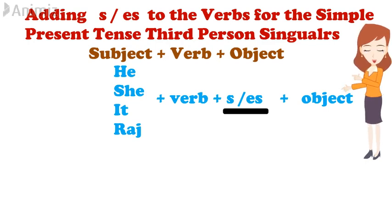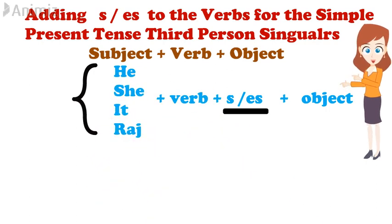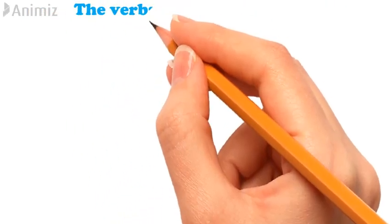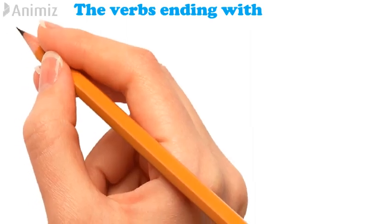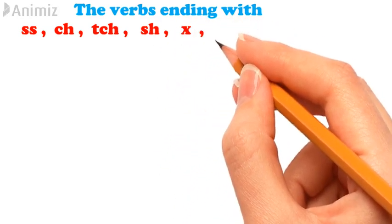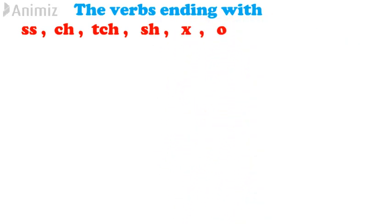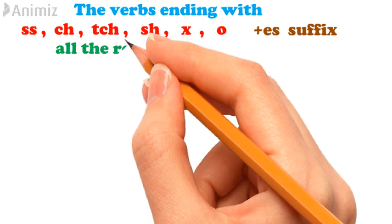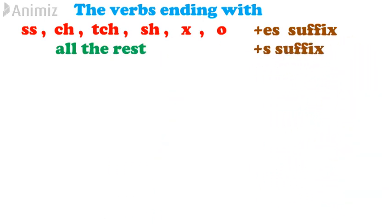Simple present tense madhe vaakye banvatas thana third person singular subject asel, thar tya cha kriya padala S kima ES prathay zhoda ba lagtu. Kriya padala S prathay zhoda cha ki ES prathay zhoda cha hye pudil niya mancha adharay tharotat. The verbs ending with the letters SS, CH, TCH, SH, X, or O need to be added with ES suffix. And all the rest, they need to be added with S suffix.